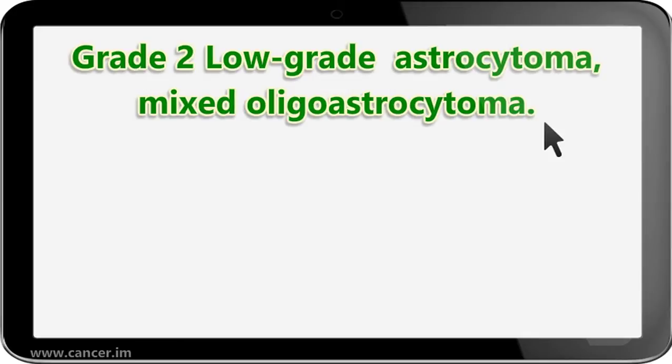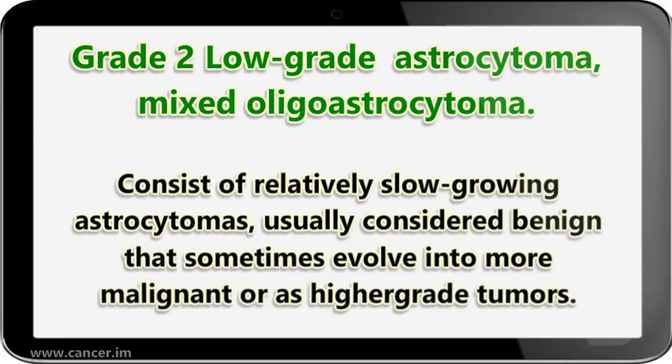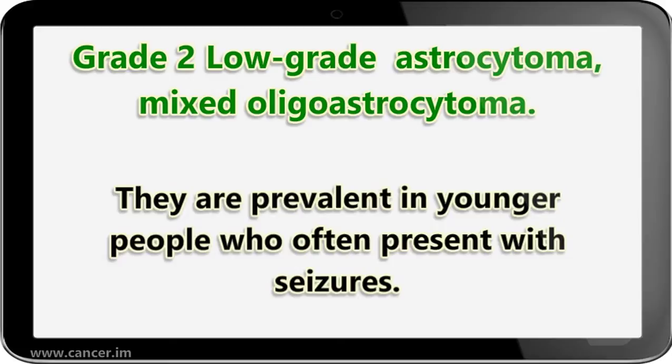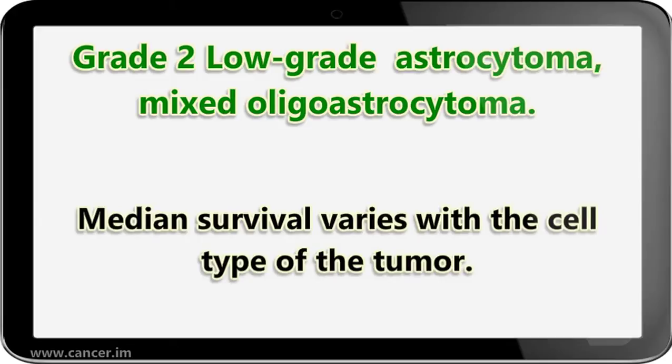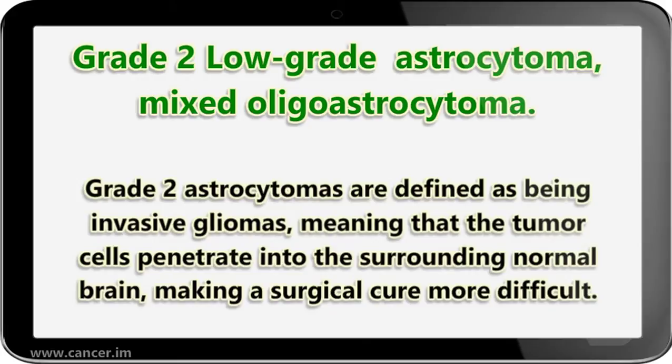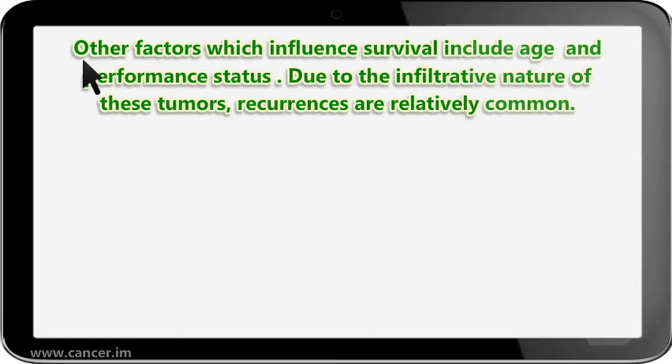Grade II includes low-grade astrocytoma and mixed oligo-astrocytoma. These consist of relatively slow-growing astrocytomas, usually considered benign, that sometimes evolve into more malignant or higher-grade tumors. They are prevalent in younger people who often present with seizures. Median survival varies with the cell type of the tumor. Grade II astrocytomas are defined as being invasive gliomas, meaning that the tumor cells penetrate into the surrounding normal brain, making a surgical cure more difficult. Other factors which influence survival include age and performance status.